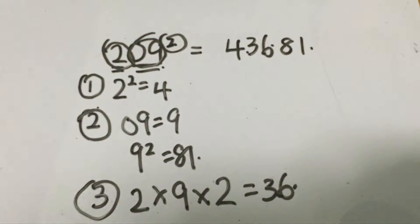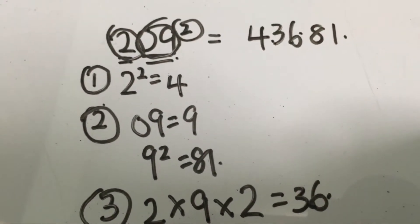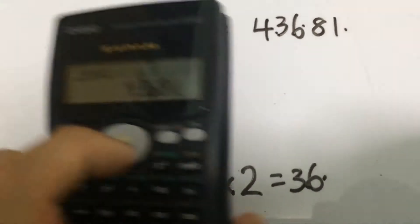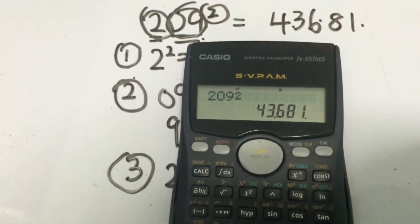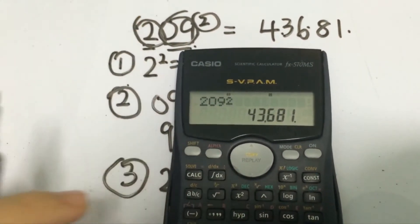So the final answer to 209 squared is actually equals to 43681 and checking using the calculator, this is the answer same as what we have gotten.